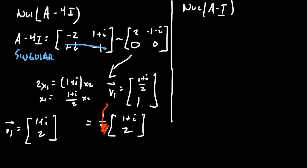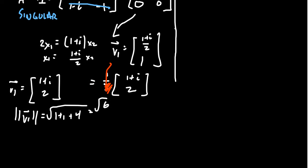Since we're looking for a unitary diagonalization, we need to normalize v₁. The length of v₁ is √(1² + 1² + 2²) = √6, squaring real and imaginary parts individually and adding. So our normalized eigenvector is u₁ = (1/√6) · [(1+i), 2].